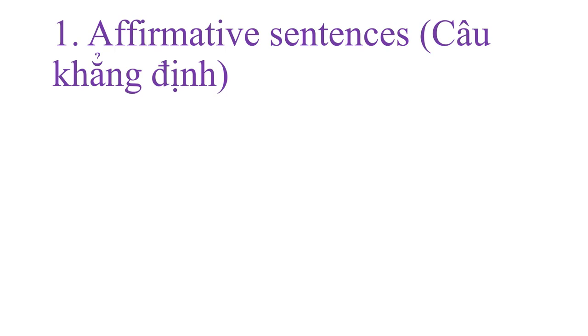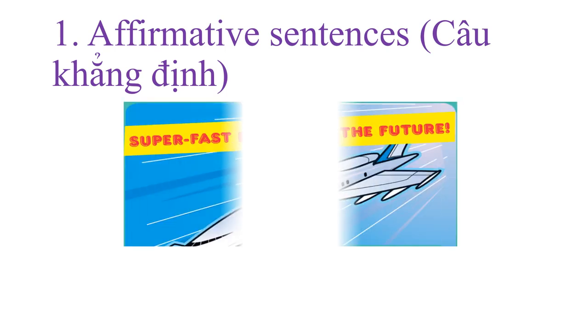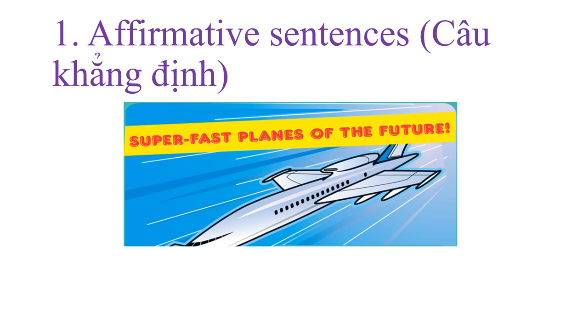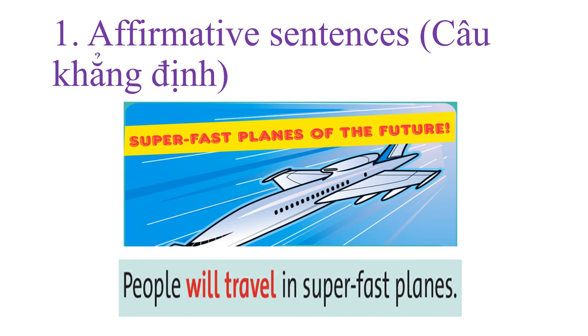Number one: affirmative sentences. I will show you a picture — this is a super fast plane of the future. So a sentence like this: 'People will travel in super fast planes.' You see the words 'will travel' here. This is a sentence used to predict events that may happen in the future.